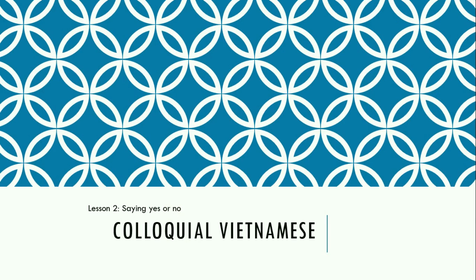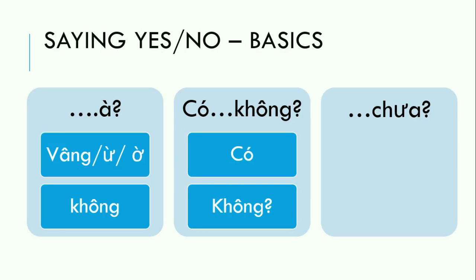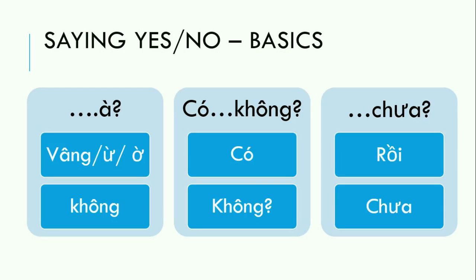First I'll remind you of the basics of the yes/no question. We have three types. The first one is with 'à' at the end, used when you want others to confirm what you're saying. To respond, we have 'ừ' if talking to somebody older, or a different form if talking to somebody younger, and 'không' to say no. The second type is the most polar — 'có...không' — and the response is simply 'có' for yes and 'không' for no.